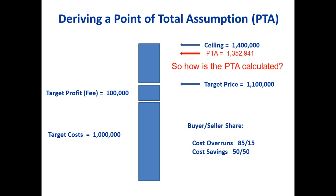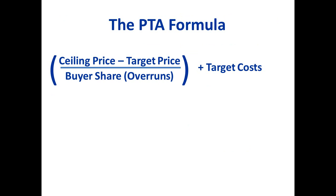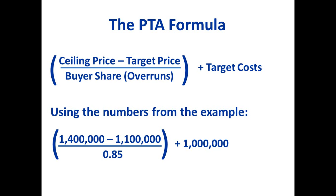It's a fairly simple formula to calculate PTA — point of total assumption. It's the ceiling price minus the target price, divided by the buyer's share for overruns, plus the target costs. So there's a subtraction, a division, and an addition. Plugging in the numbers from our example: one million four hundred thousand minus one million one hundred thousand equals three hundred thousand dollars. Divide that by 0.85, then add a million. It's important to remember to divide by 0.85, not multiply by it.